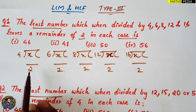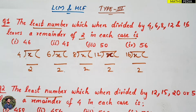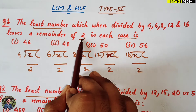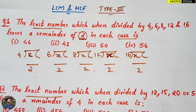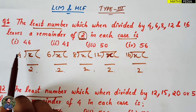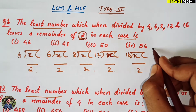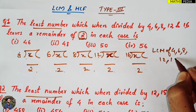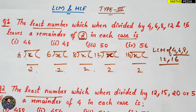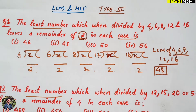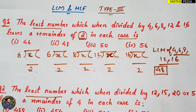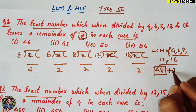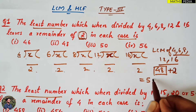Let us find this out. The basic idea is: whenever this type of question comes where we have to find the least number and the remainder is the same in each case, what do you need to do? Whatever is there as divisors — that means 4, 6, 8, 12, 16 — you take their LCM. LCM of 4, 6, 8, 12, and 16 will be 48. After getting the LCM, you just add whatever remainder is given, which is 2. So the answer is 50.